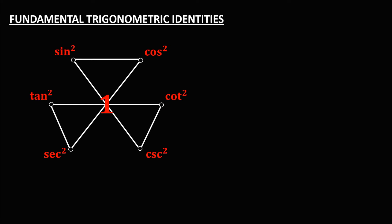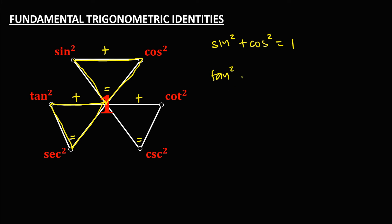For the identities for the square of a function, focus on this triangle. The sides are plus, plus, plus and equals. So we have sine squared plus cosine squared equals 1. For this triangle, it's tangent squared plus 1 equals secant squared. And for this triangle, we have 1 plus cotangent squared equals cosecant squared.